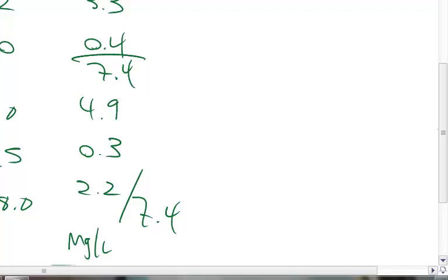For the concentration as CaCO₃, that would be milligrams per liter as CaCO₃ equals the milligrams per liter of the species times 50 divided by the equivalent weight of the species.